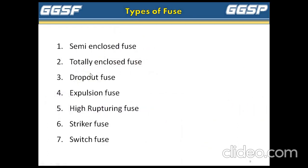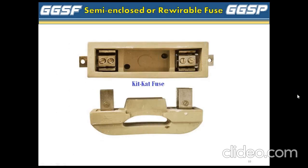These are the types of fuses under low voltage and high voltage: semi-enclosed fuse, totally enclosed fuse, drop out fuse, expulsion fuse, high rupturing fuse, striker fuse, and switch fuse. First is the re-wireable fuse, also known as kitkat fuse. They are mainly used in small scale industry and house wiring. It mainly consists of two parts: fuse base and fuse link carrier. The fuse elements used are aluminium, copper, or lead.